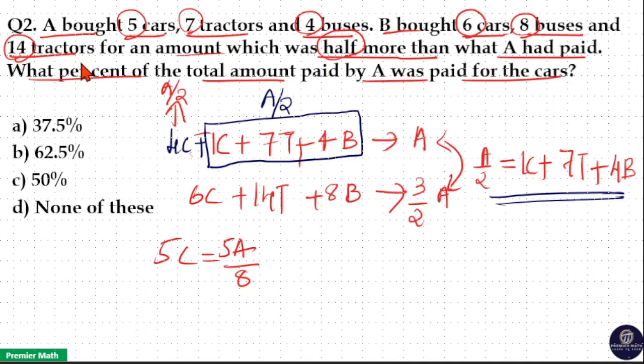The question is, what percent of total amount paid by A was paid for the cars? A paid total amount A rupees. For 5 cars he paid 5 by 8 of A, which means the percentage required is 5 by 8.